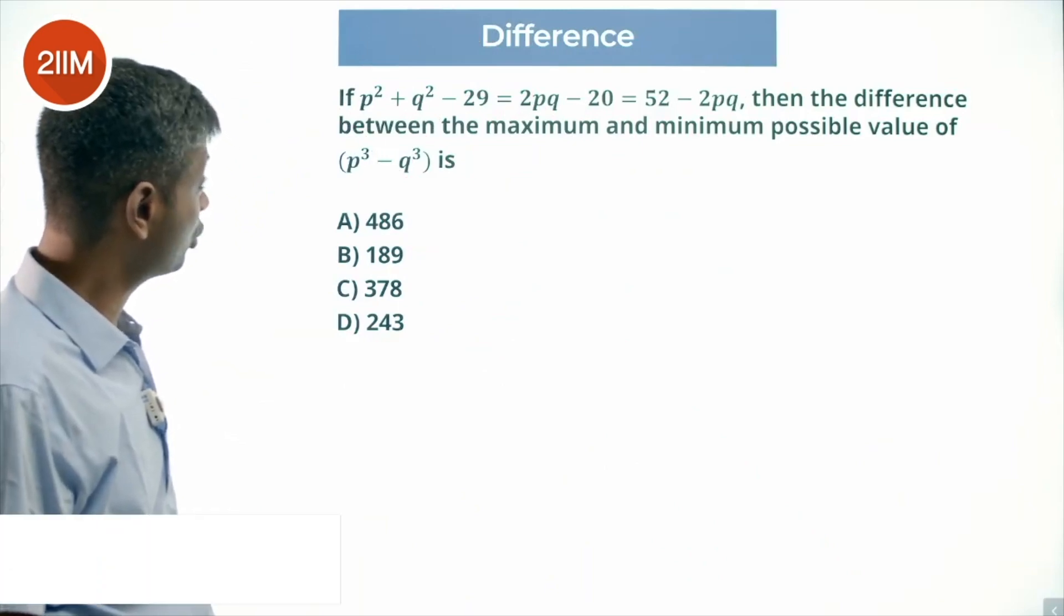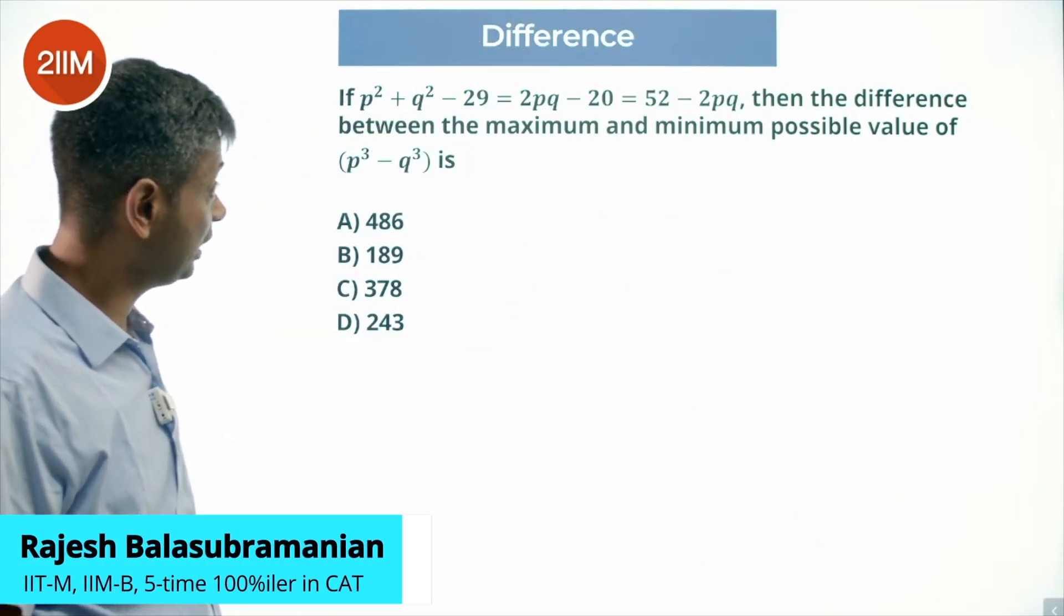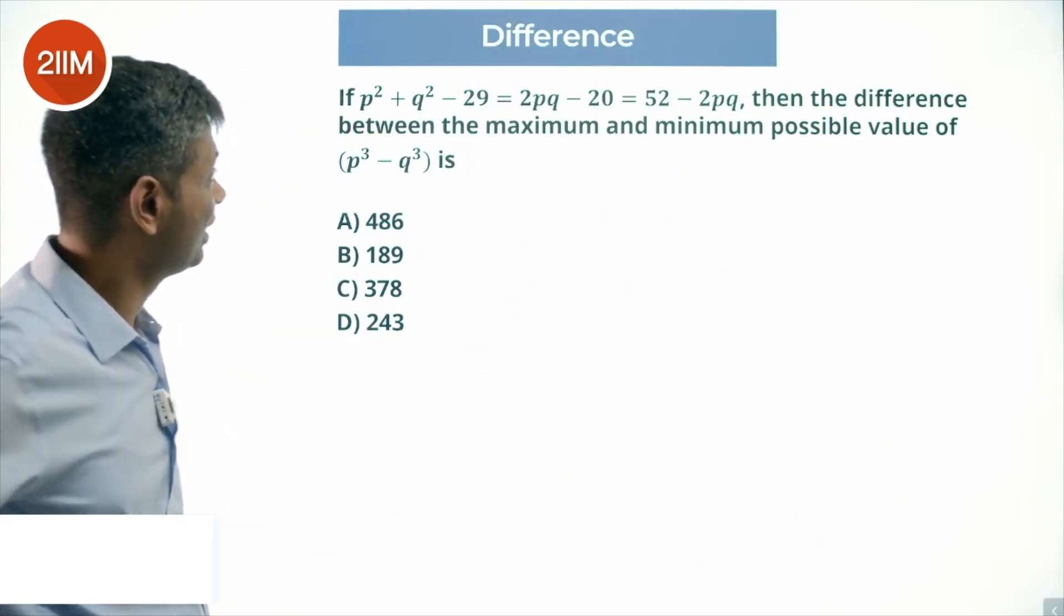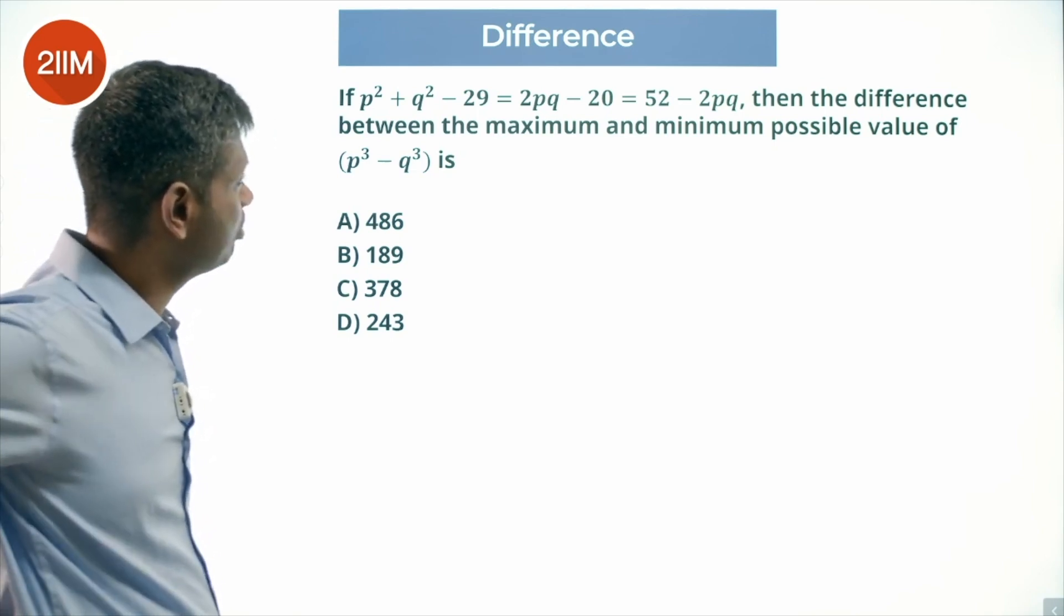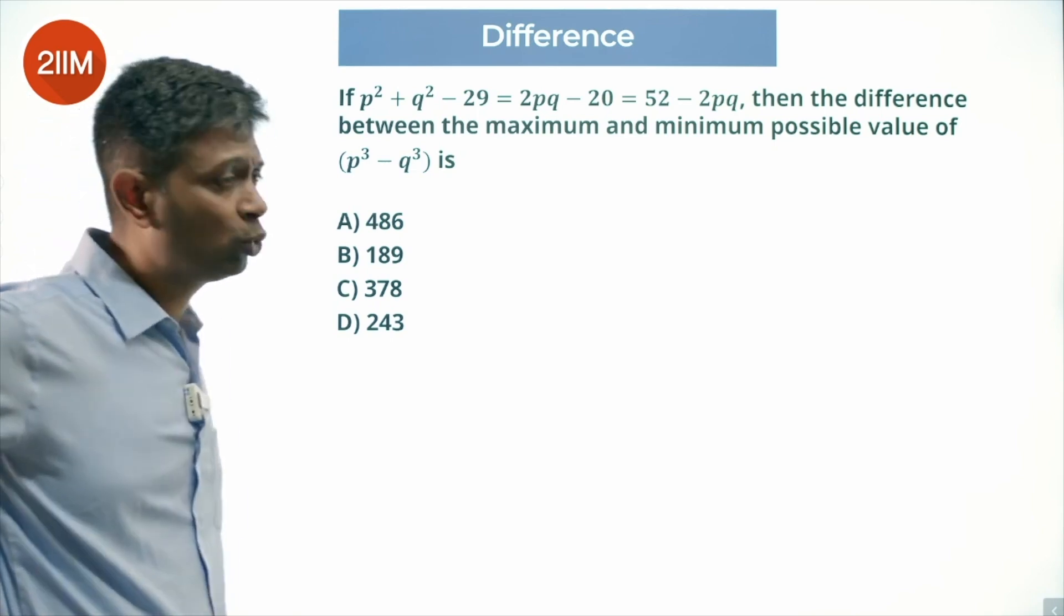P square plus Q square minus 29 equals 2PQ minus 20 equals 52 minus 2PQ. Then the difference between the maximum and minimum possible values of P cube minus Q cube.